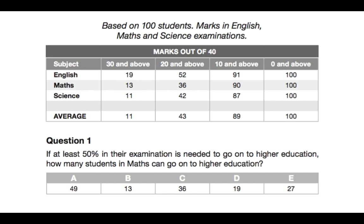Let's take a look at a sample question. Upon first presentation this looks quite complex, but it's not. The trick with this kind of data interpretation and numerical reasoning test question is to break down the information and only look at the section that you need. So in question one, it says: if at least 50% in their examination is needed to go on to higher education, how many students in maths go on to higher education?